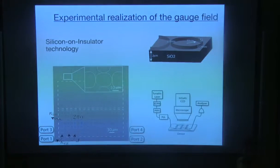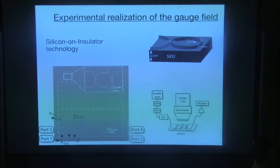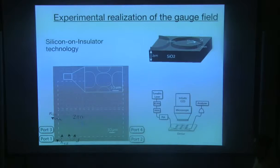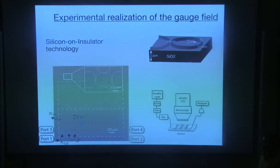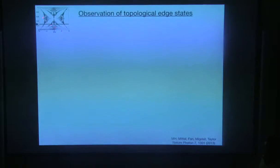One important point is that these resonators are not perfect — they're leaky. The photons can leak out of the system, and actually that's a good thing. Because we can put a camera, and if the scattering rate out of these resonators is uniform, we can basically image the state. I'm not talking about tomography — I'm just looking at the wave function amplitude on each site. So what we should expect is the following: we have our spectrum, and if we send a photon at certain frequencies, it should couple to the bulk or edge states.